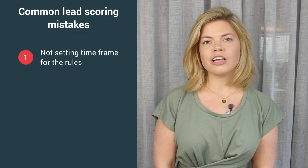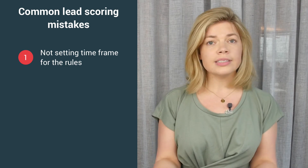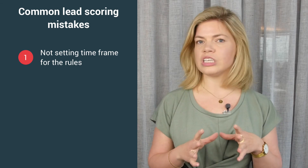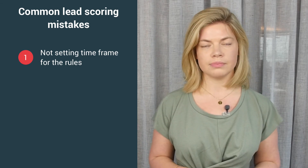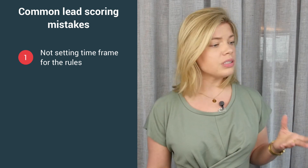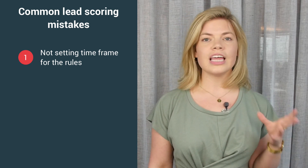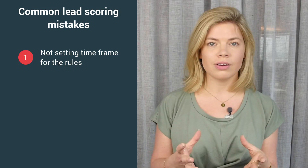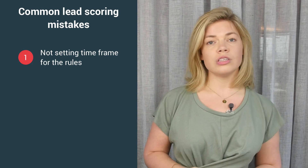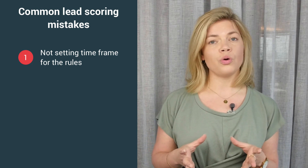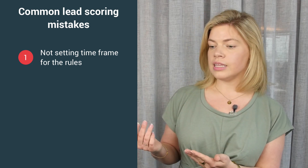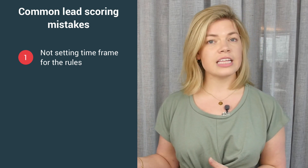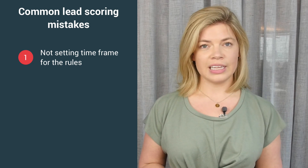Number one: not setting a time frame for your score rule. Let's say a lead visits your web page and gets 10 points for that, but then you see no more activity from the lead. Unless you set up a time frame, the lead will still have those 10 points even though it has most likely lost interest. You want your lead scores to be current, and you do that with a time frame. You could set that the lead should only get those points if the action happens in the past three weeks, for example. If it's been longer than that, the points expire and are removed from the lead's score.